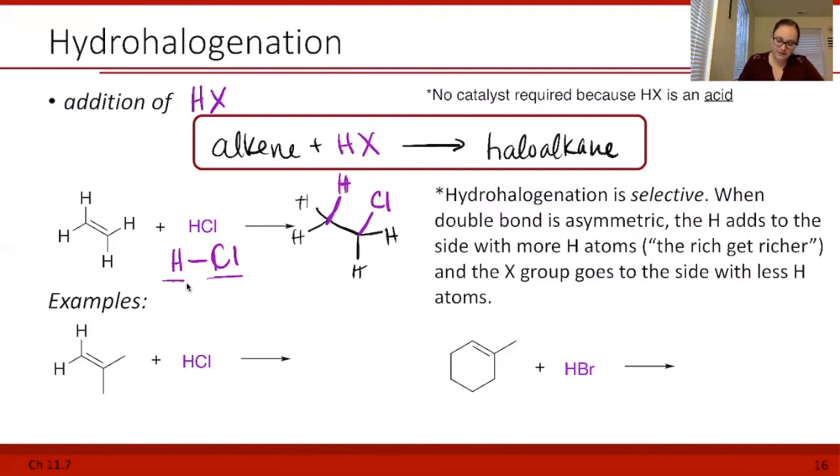If we're looking at this example down here, let's draw out our molecule. The side with more hydrogens, this side over here, is going to get the hydrogen. The side with less hydrogens is going to get the halogen. So that's the answer.